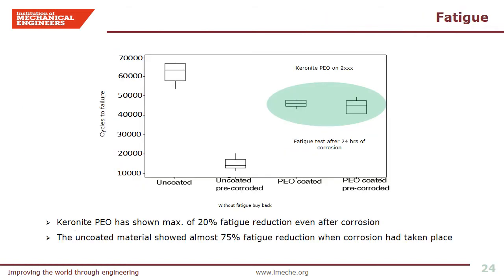An often sought and important property from a coated material is its fatigue life. Coatings in general are reported to result in fatigue debit. Most commonly used hard anodizing on aluminum alloys often reduces fatigue life by 50%. This slide shows fatigue test data for uncoated and PEO coated 2000-series alloy without and with the effect of pre-corrosion. The PEO coating does reduce fatigue life but not exceeding 20%. The interesting result is the effect of pre-corrosion: the uncoated alloy reduces fatigue by almost 75% when corrosion is present, whereas the PEO coated material experiences only a small reduction in fatigue performance after corrosion.